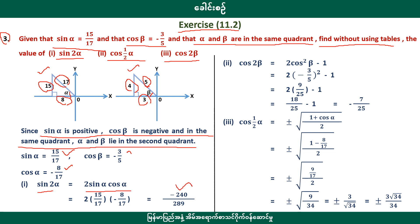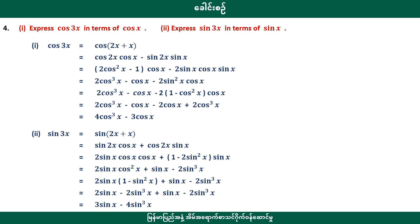Sign number 4 is to express cosine 3x in terms of cosine x. Let's start with cosine 3x. Cosine 3x will be cosine 2x. Cosine 2x will be 2x — cosine 2x will be 2x.